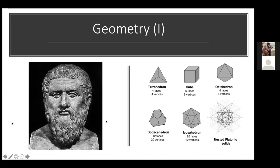I want to briefly talk about geometry — geometry is like the favorite tool of physicists. Modern day physics is basically based on geometry. In the early days, Plato and Pythagoras were ancient mathematicians and philosophers. They had this kind of mystical belief about math, whether it's an invention or objective. Plato postulated that all the objects we observe consist of what was known as the Platonic solids — the ideal objects that constitute the world.